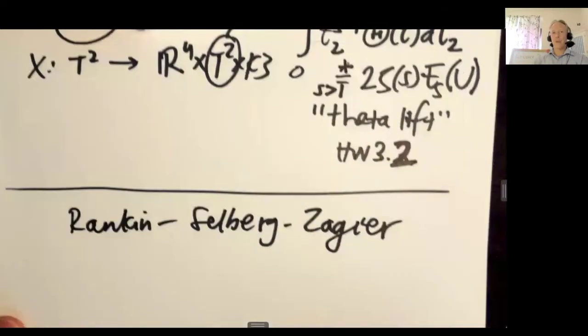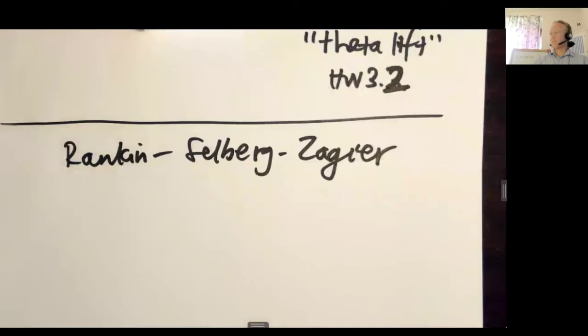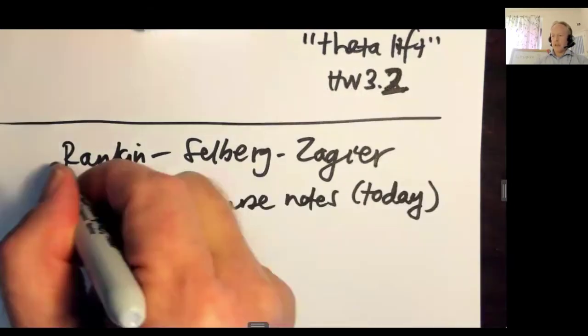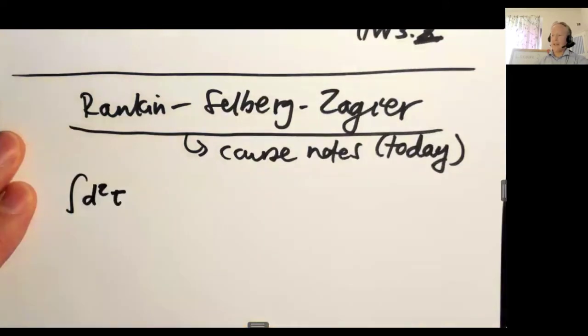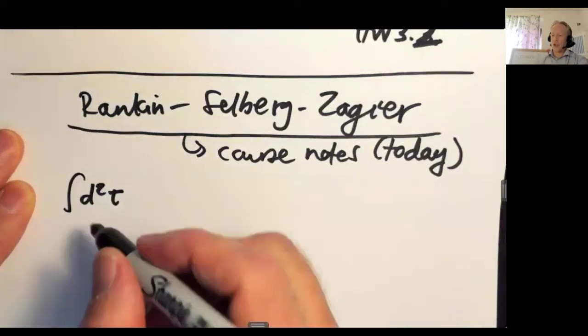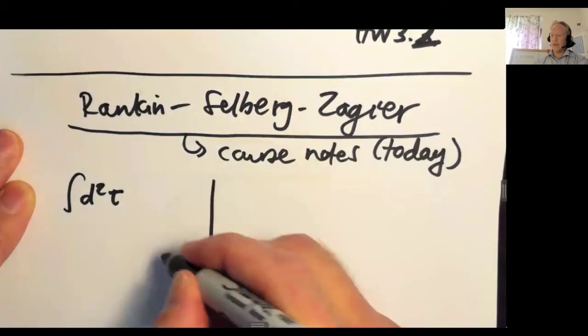So I will talk about that extensively on Friday. But the basic point, I can state in a few minutes, we're trying to compute these tau integrals. The simplest example that I can think of, where you see both why this is challenging and what you need to maybe do to succeed, is to just compute the area of the fundamental domain.